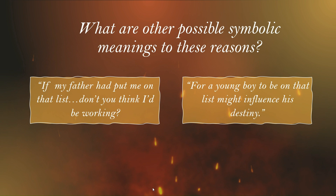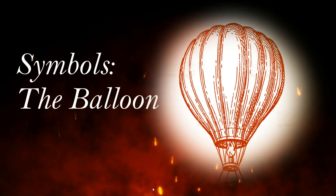Guy wants to put his son on the hiring list, but Lily doesn't want that. Guy says, 'If my father had me put on the list, don't you think I'd be working?' Whereas Lily says, 'For a young boy to be on that list might influence his destiny.' Guy sees this in a very practical way — this is the only way to break the cycle. Whereas Lily says we need to give him the freedom to choose his own path. This conflict between the parents — how to set their son up for a better life — is something they have trouble coming to agreement on.